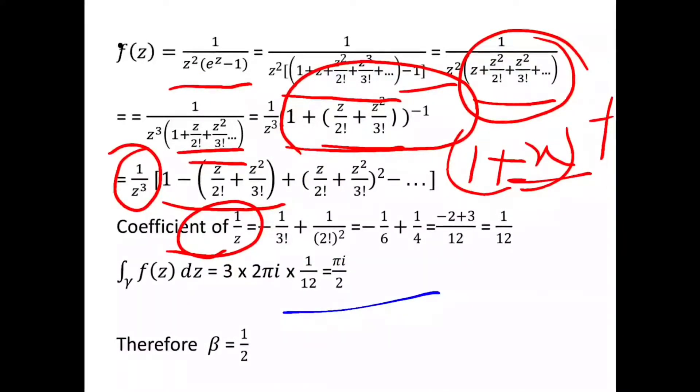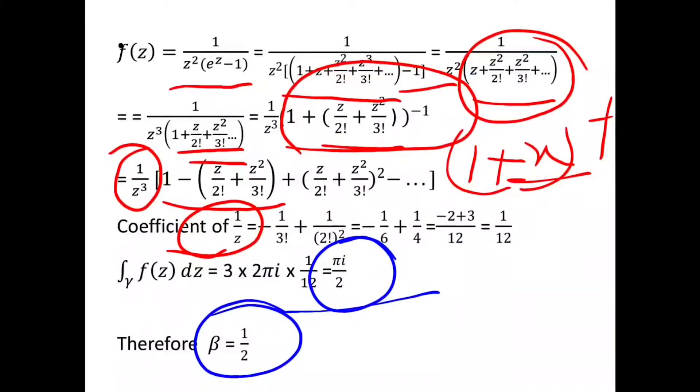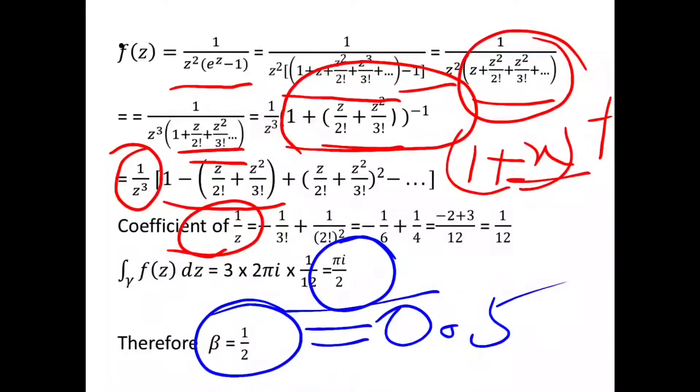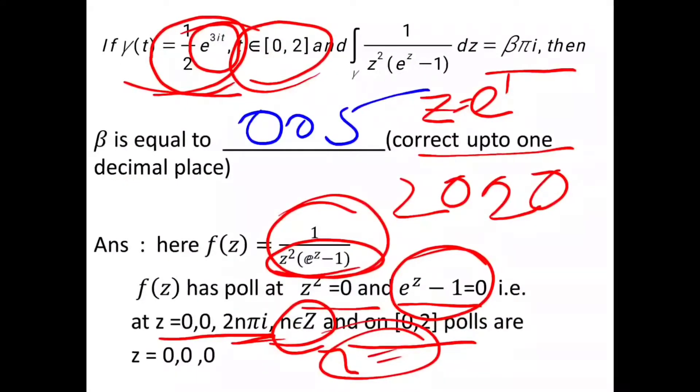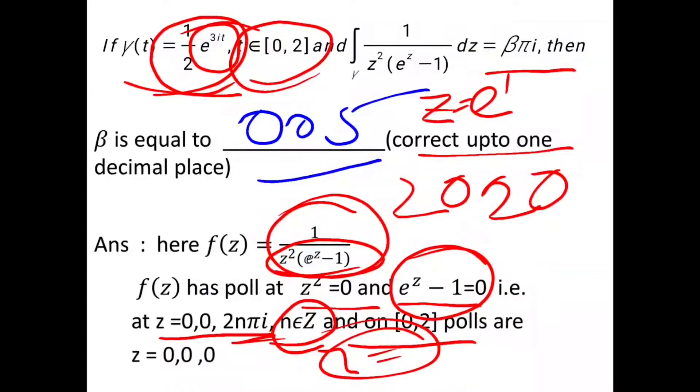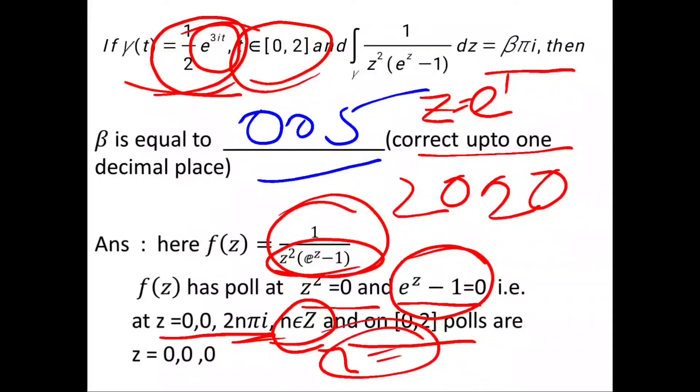This gives β = πi/2, so β = 1/2, which equals 0.5. So the value of β should be 0.5, which is correct up to one decimal place. Thank you for watching, please like and comment. Thank you.